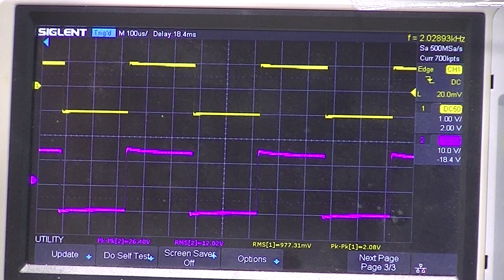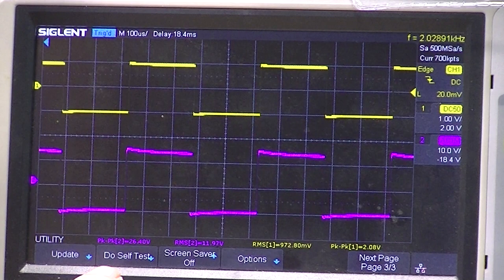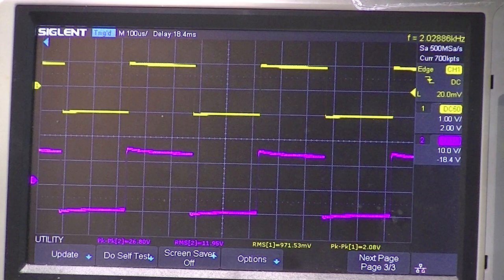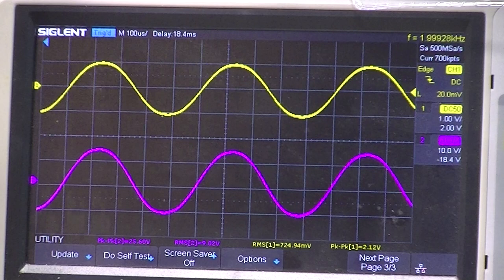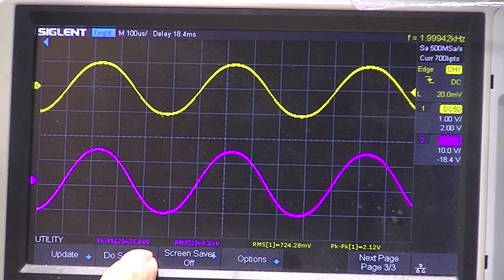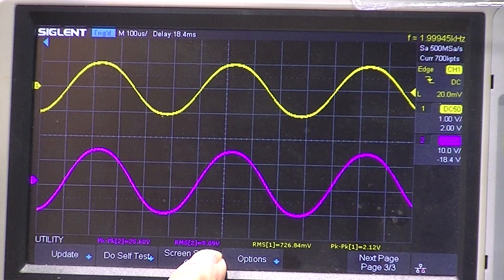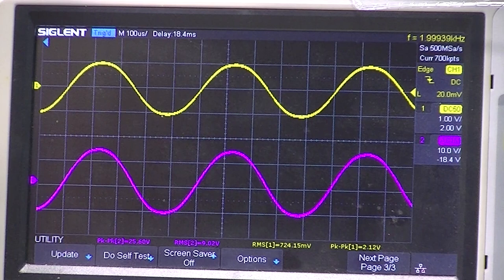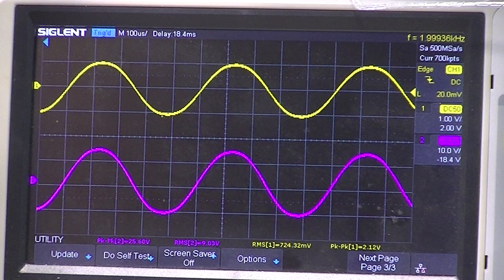It occurs to me that a sine wave will have less RMS voltage than a square wave. The peak to peak voltage of 26.4 changed to a sine wave. The peak to peak voltage actually went up to 25 but the RMS value went to 9, which equals 10.125 watts.